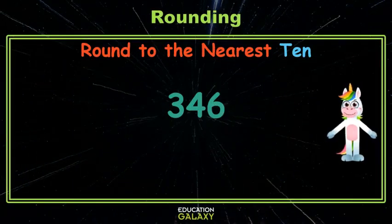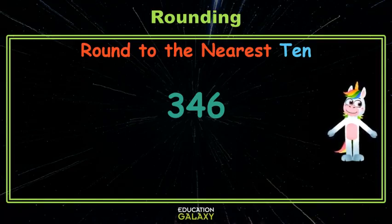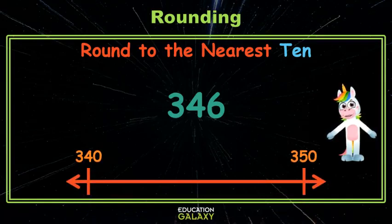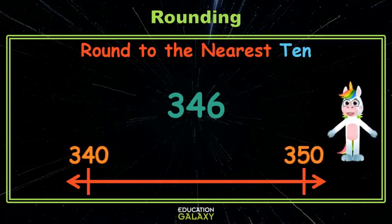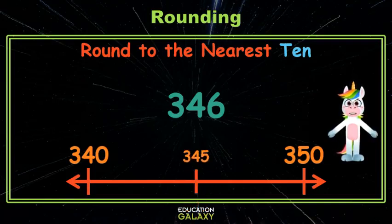Here we're rounding 346 to the nearest ten. That just means we want to know if 346 is closer to the ten that comes before or the ten that comes after. We'll use a number line that marks the ten that comes before and the ten that comes after. 340 is the ten that comes before and 350 is the ten that comes after. Let's also mark the number in the middle. What number comes between 340 and 350? If you said 345, you're correct. So we'll mark that on our number line too.